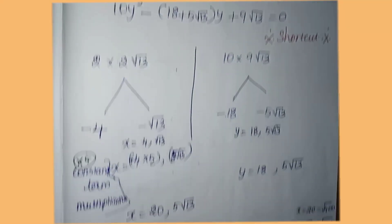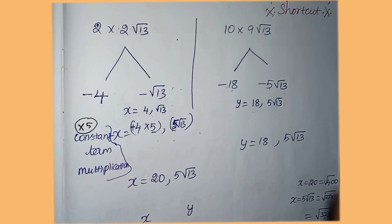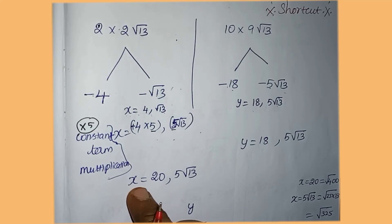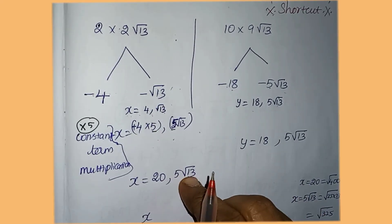Then you multiply by 5. How to multiply the value with root: 4 times 5 is 20, and 5 times 5 is 25.